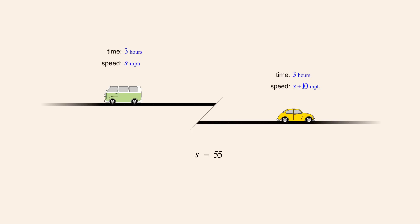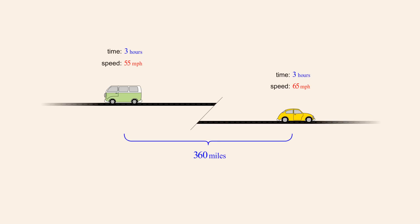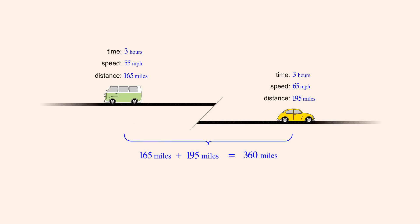Since s represents the speed of the bus, the bus's speed is 55 miles per hour, and the speed of the car is 55 plus 10, or 65 miles per hour. We can check these results by multiplying the travel time times speed for each vehicle. The distance traveled by the bus is 3 times 55, or 165 miles. The distance traveled by the car is 3 times 65, or 195 miles. Since the sum of these two distances is indeed equal to 360 miles, we know that our calculations were correct.